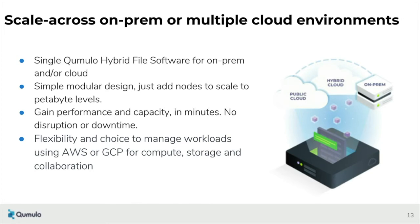We scale across on-prem and multiple cloud environments. We are a software-only, software-based architecture allowing us to run on any qualified hardware — and that qualified hardware also includes AWS and GCP nodes. Managing growth is simple with Cumulo because of the node-based architecture. You can use industry-grade hardware either from Cumulo or HPE, or purchase Cumulo through Fujitsu, adding one node at a time and scaling both performance and capacity on demand.